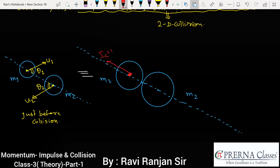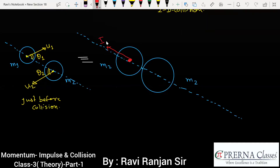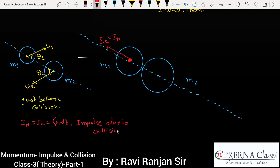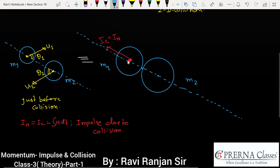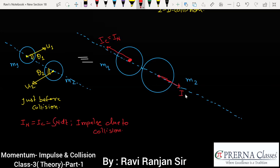So one impulse direction is Ic — impulse of collision — that is the normal impulse. Due to the normal force there will be an impulse, that is Ic or you can say In. Here In equals integral of N dt — the impulse due to collision. Due to interaction, impulse will act on m1 in one direction and on m2 in just the opposite direction. So it is again Ic or In — both impulses have equal magnitude but opposite direction.